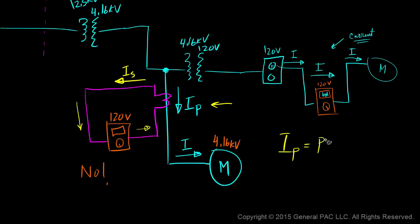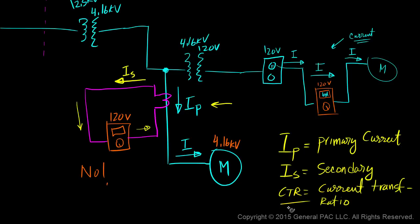IP is called primary current. And IS is called secondary current. And CTR is called current transformer ratio.